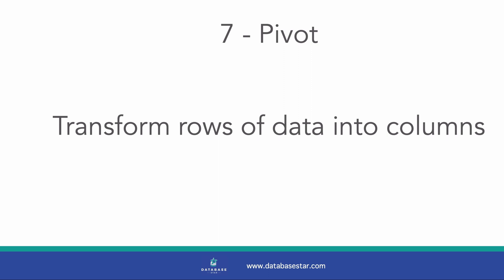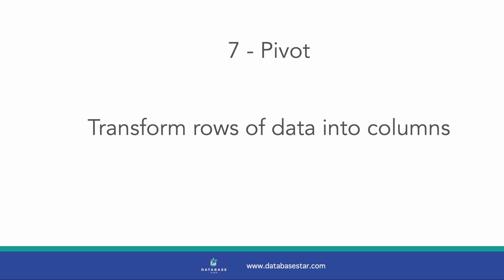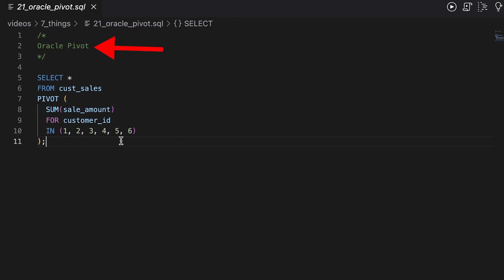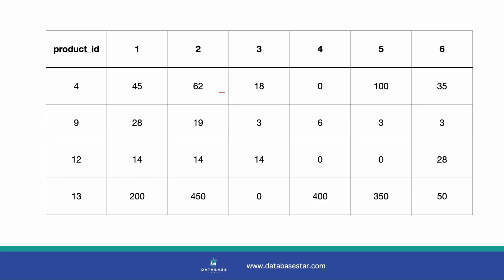The final feature I want to share is called Pivot. It allows you to turn rows of data into columns. It's like creating a pivot table in Excel, if you've ever done that before. It means you can show a summary of data where you have some values as rows and others as columns, and the intersection shows the calculation of each row and column. In Oracle, you use the PIVOT keyword and provide several inputs inside brackets. Inside the brackets after PIVOT, we specify the sum of the sale amount column, then for the customer ID column, and then the individual customer IDs to use as column headers. Our output will have locations in the first column, customer IDs as column headers, and the sum of amounts for the values. I'll share links to my guide on pivot tables in the description below.